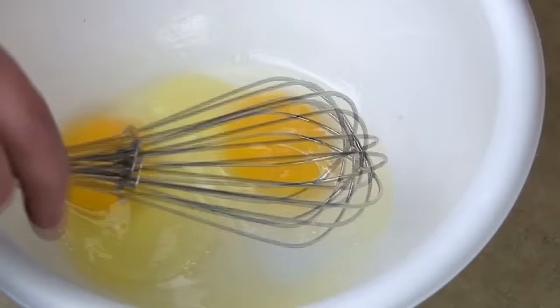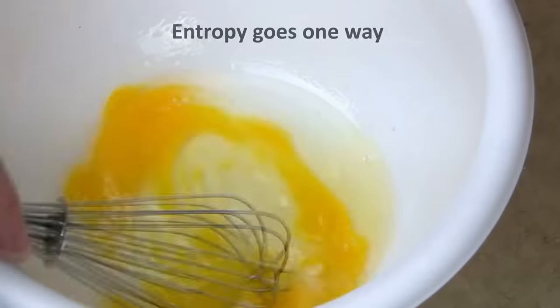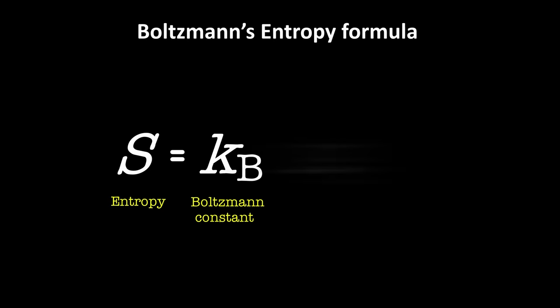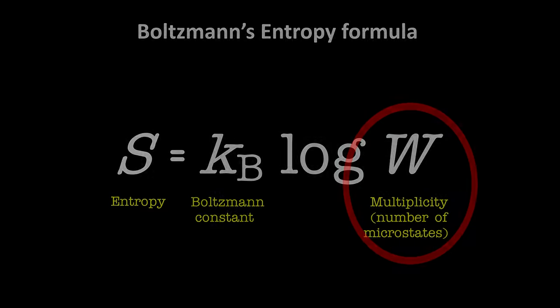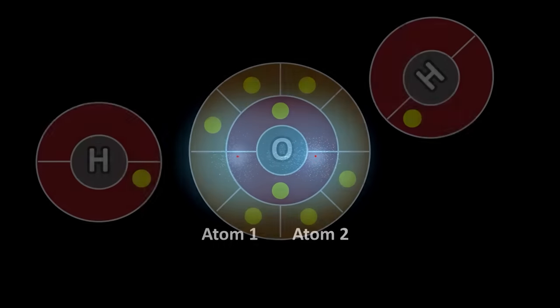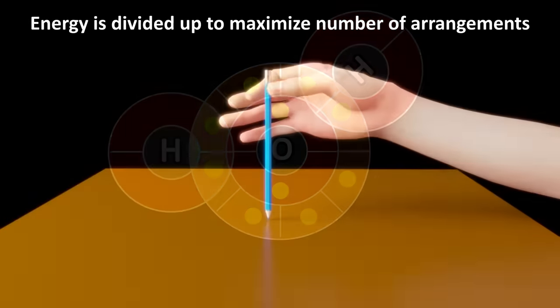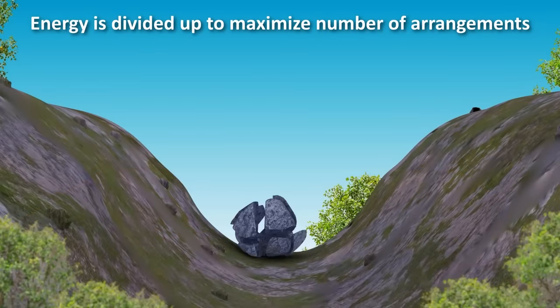This idea of probability of something occurring in one direction versus another, when modeled mathematically results in the concept of entropy. Entropy is the logarithm of the number of ways a system can be arranged. The greater the number of ways a system can be arranged, the higher its entropy. So when we say that a system has a tendency to go to lower energy, what we are really talking about is that the total energy of a system will be divided up in such a way that maximizes the number of ways the system can be arranged.